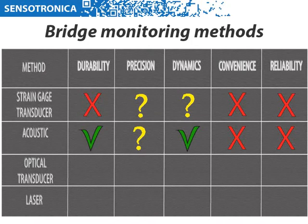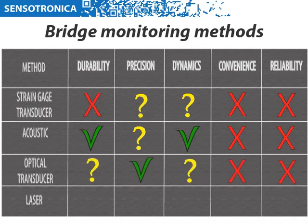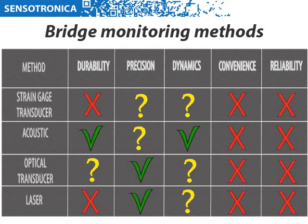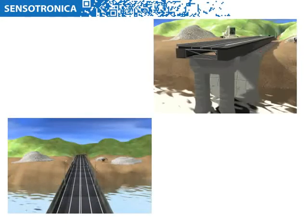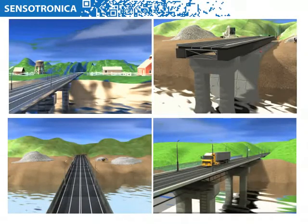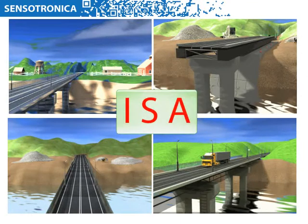Ultrasonic, electromagnetic, and eddy current crack detectors help to reveal only already existing cracks, when it's more important to detect a pre-destruction state. Optical and laser methods, influenced by surrounding conditions, can't suggest data reliable enough to give a precise estimation. It's evident that a completely new approach to monitoring is necessary — a system that would allow full-scale analysis of bridge states and foresee problems.